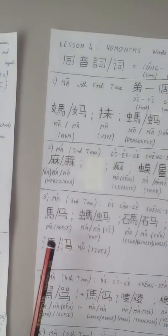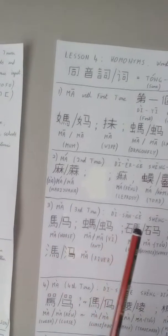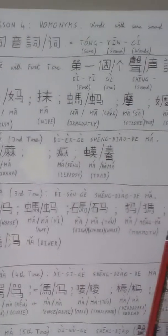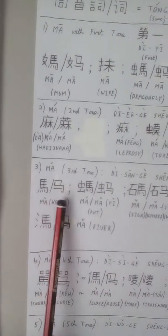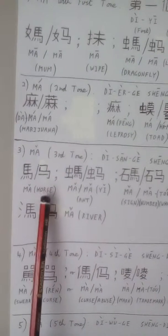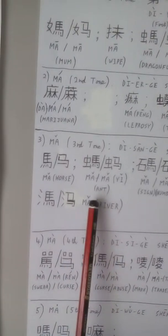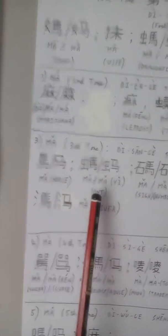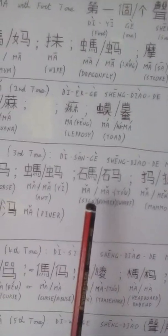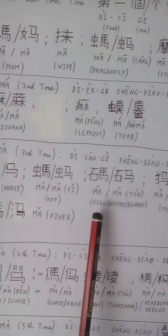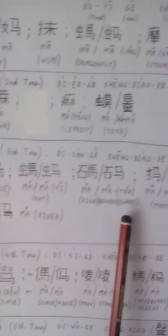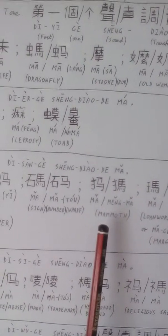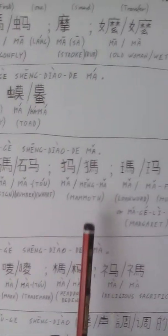The third sounding 马 is horse, and this is the simplified horse. And 蚂蚁, 马蚁, is an ant. 码头, the 码. 码 is a sign or number. 码头 is a wharf. 猛犸 is a mammoth.